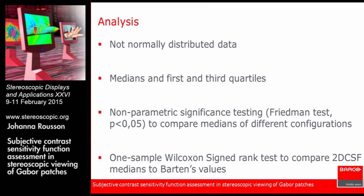To analyze our data, we first checked if it was normally distributed — and it was not. So instead of means, we used medians and first and fourth quartiles, and applied non-parametric significance testing, such as the Friedman test to compare medians across different configurations and frequencies. We also used the one-sample Wilcoxon signed-rank test to compare the medians measured for the 2D CSF against the values returned by Barton's model.